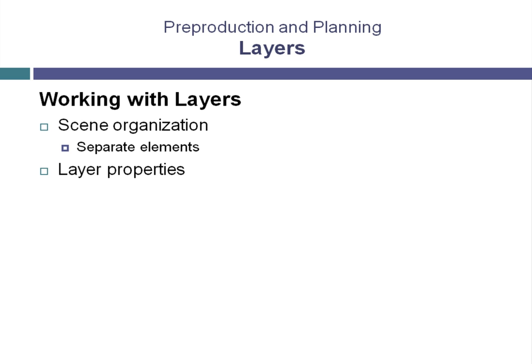Another reason to use layers is that you can access the properties for each layer. For instance, if I want to hide geometry that I don't want to render, I can set the layer for the geometry to be hidden. For example, in our building, if we're rendering a walkthrough of the second floor, and this was a four floor building, we would want to hide the layers for all the floors except the second floor. This would make our render time much faster and make working with the geometry much more efficient.